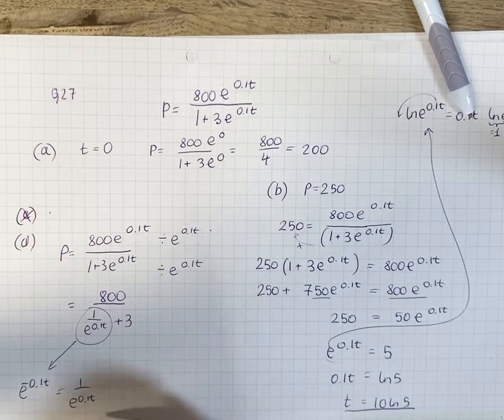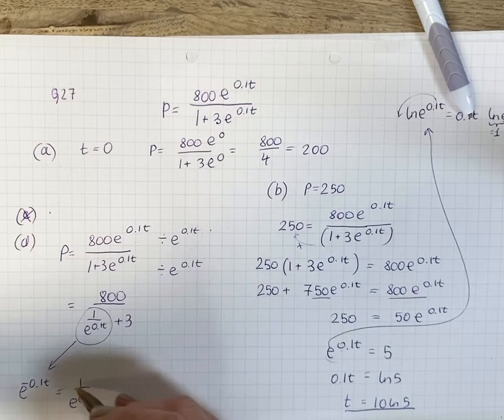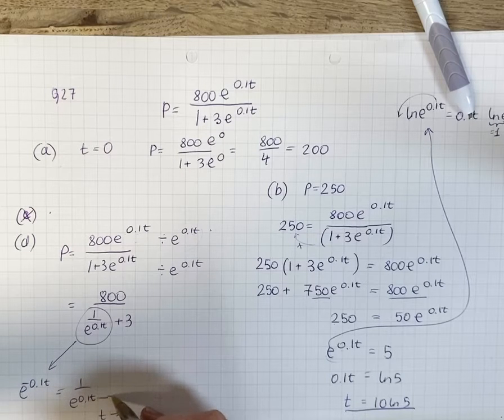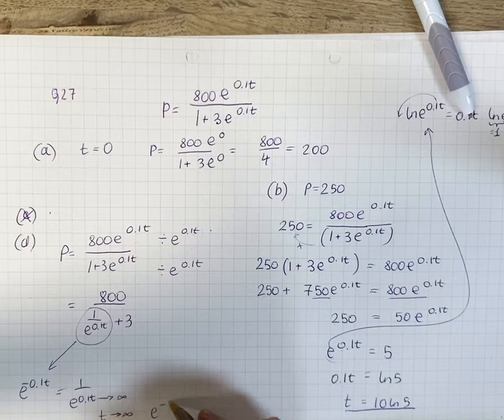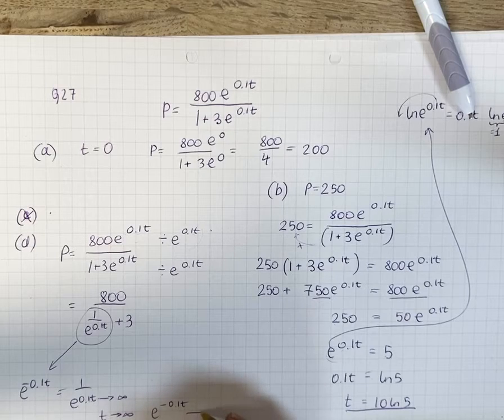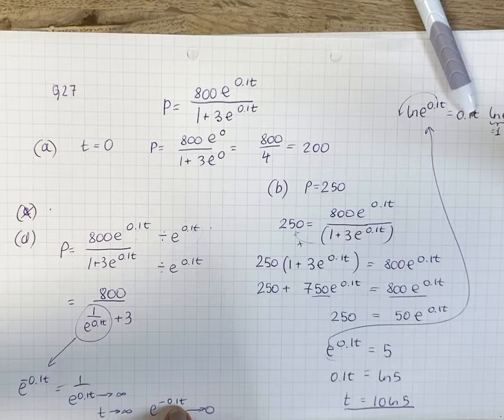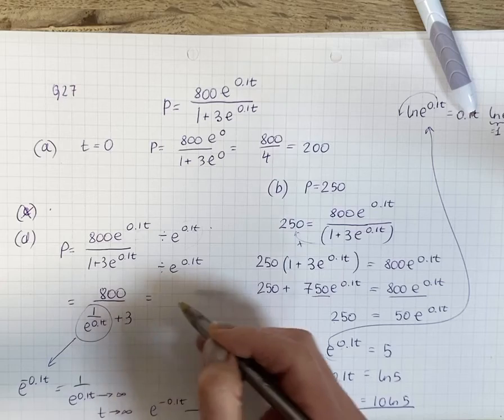And as time moves along and t becomes bigger and bigger, we say let's say tends to infinity, e to the power of 0.1t tends to infinity. But if you've got 1 over, then e to the power of minus 0.1t tends to 0. So if you try and put a few numbers in for t, very large numbers, you will see how close to 0 it is.